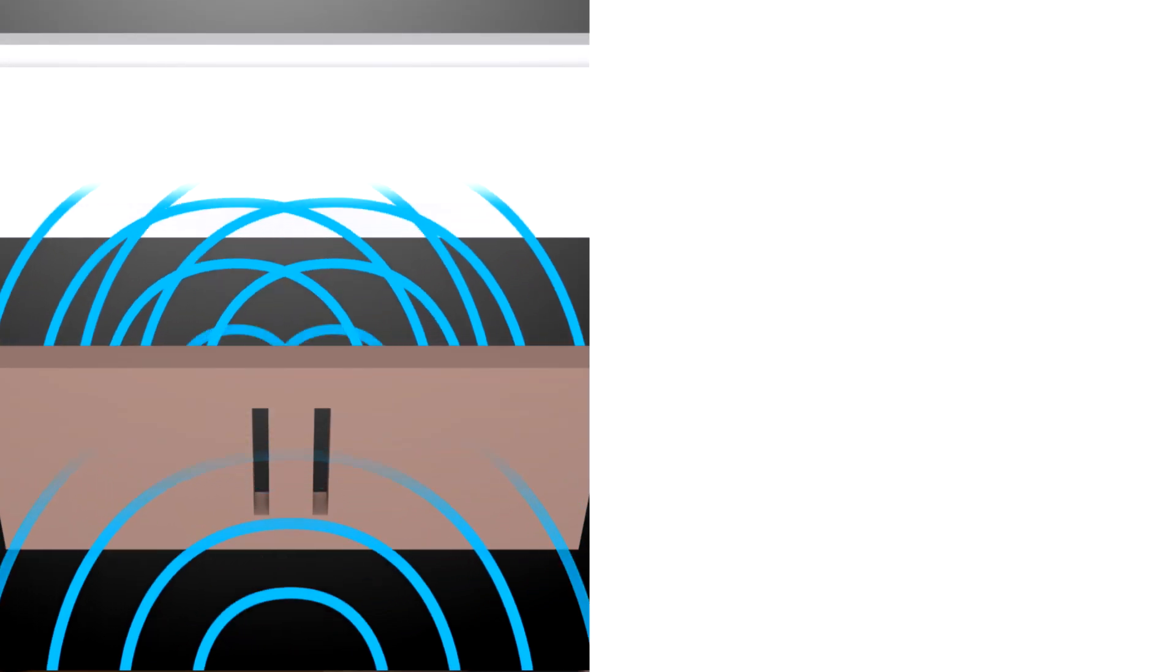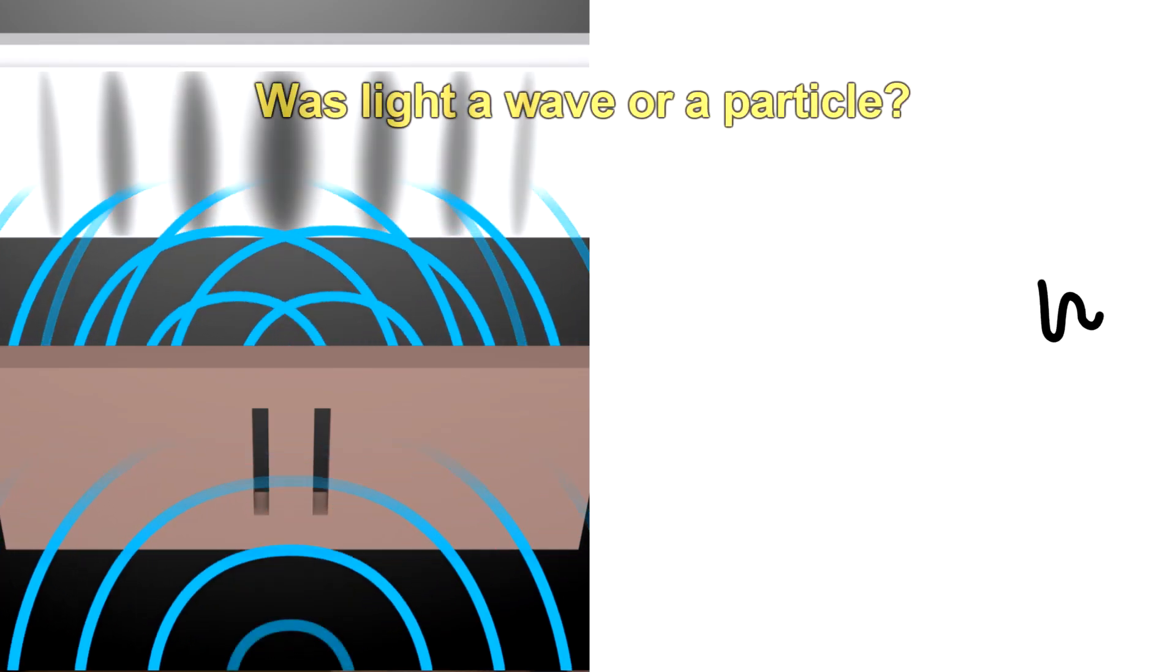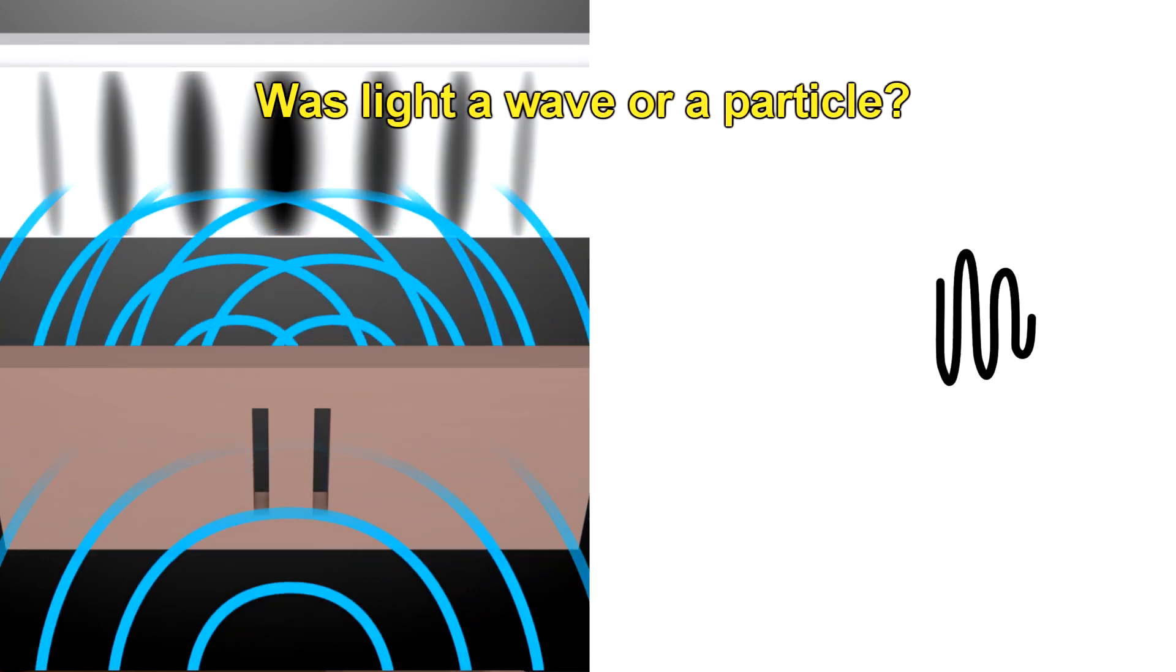So Young and Einstein's results seemed to be in conflict. Was light a wave or a particle? But then, in 1909, G.I. Taylor performed a double slit experiment, such that only one photon was emitted through the double slits at a time. So what was seen on the screen?